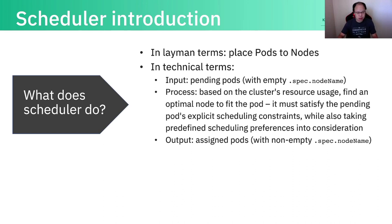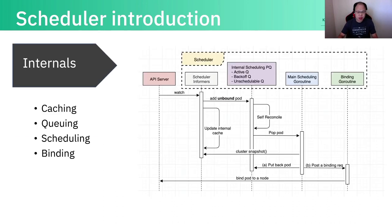That is what the scheduler does. Inside the scheduler, there are basically several components. The first one is called caching. To make the most optimal decision, the scheduler has to maintain a cache to have a sort of truth view of the whole cluster, like how many nodes are there, how many pods, how many PVs and PVCs, etc. So the scheduler runs internally a few scheduling informers to watch for the API objects so that it can maintain the internal cache properly.